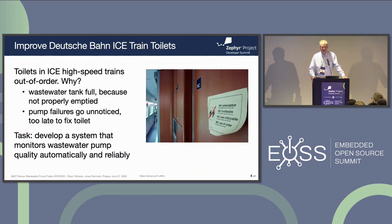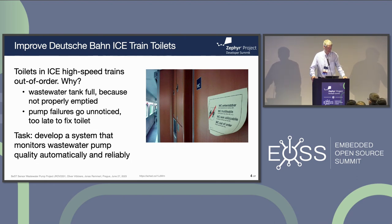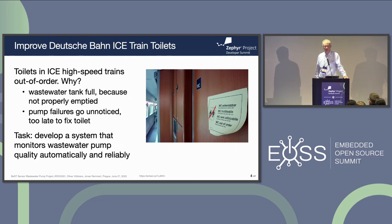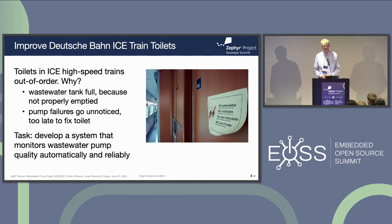So what is the task? You might have heard about the ICE trains, the Intercity Express trains from Deutsche Bahn. If you travel with them regularly, then you have experienced the sign as you can see on the photo — sometimes the toilets in the ICE trains are out of order. The toilet might be dirty, but quite often the reason is that the wastewater tank is full because it was not properly emptied before. There would be an overflow, and to avoid another overflow, it's shut down. The reason why the tanks are full is that pump failures go unnoticed. When the train is traveling, it's too late to fix the toilet. So our task that Deutsche Bahn had for us was to develop a system that monitors the wastewater pump automatically and reliably.